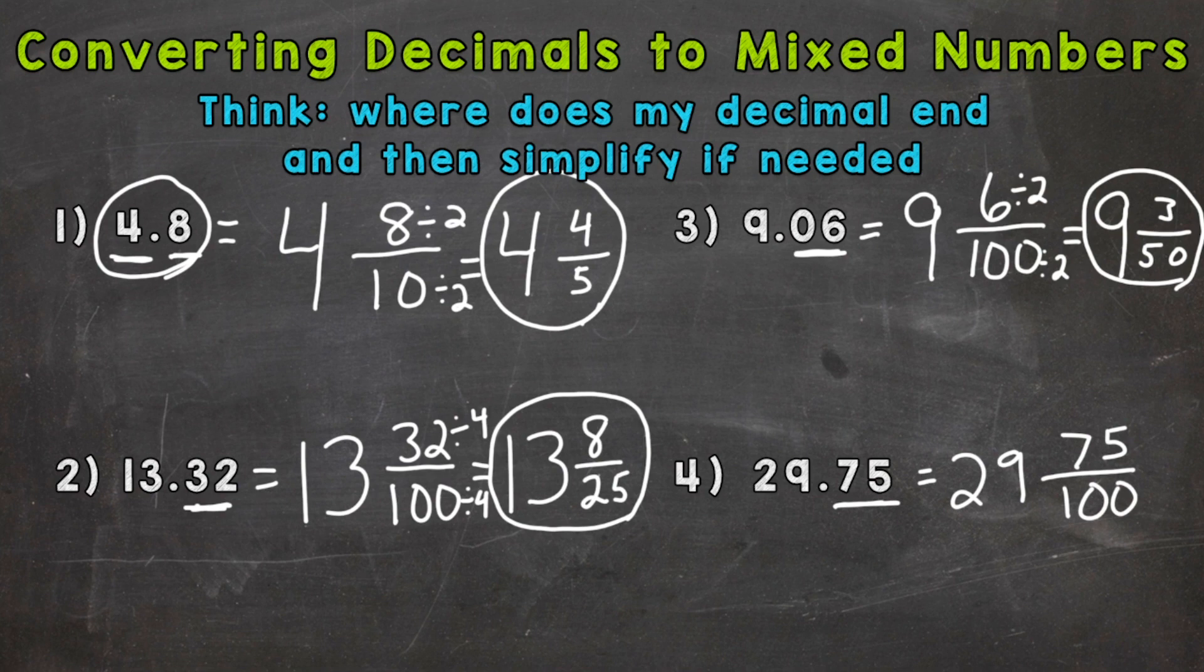And now simplify. So keep our whole number the same. And the greatest common factor between 75 and 100, we can divide both of these by 25. And we end up with 75 divided by 25 is 3. And 100 divided by 25 is 4.